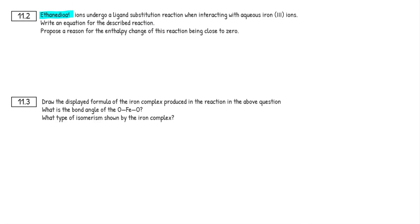So ethanedioate ions undergo a ligand substitution reaction when interacting with aqueous iron 3+ ions. We need to write an equation for the described reaction and propose a reason for the enthalpy change being close to zero. AQA has thrown in some thermodynamics here, but it's not that hard if we break it down using logic and memory. I'd recommend using flashcards to memorize these equations — this is straight out of the spec.